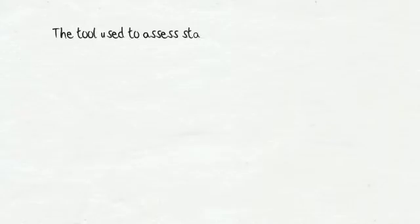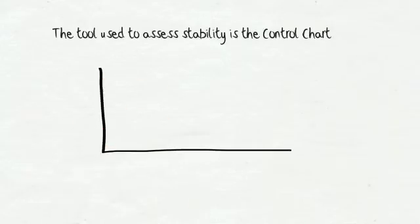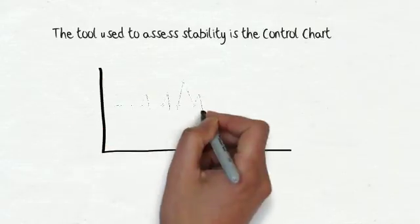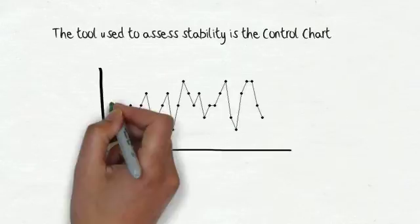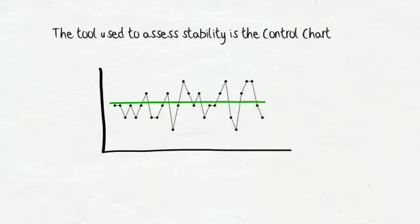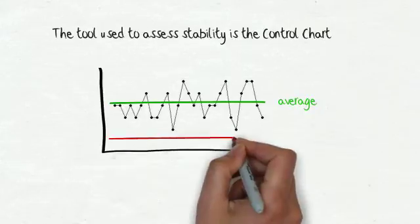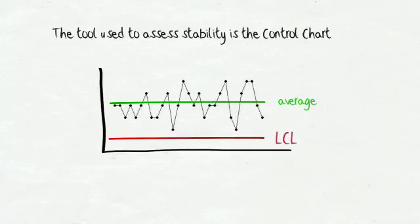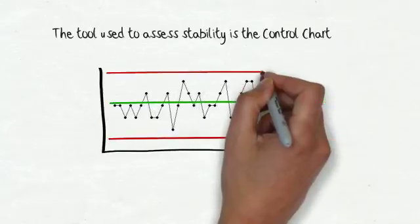The tool used to assess stability is the control chart. Control charts can be used for continuous and discrete data. All control charts have three components: data points over time, a center line which is the average, and control limits, such as a lower control limit and an upper control limit.